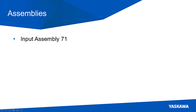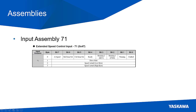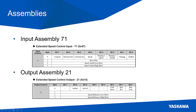Before we start, there are a couple of things that we need to do. First, we need to select our input assembly — the data going to the PLC. Second, we need to select our output assembly — the data going out of the PLC. For this, we'll select input assembly 71 and output assembly 21.